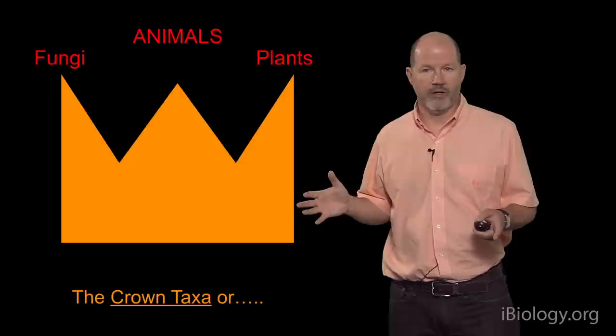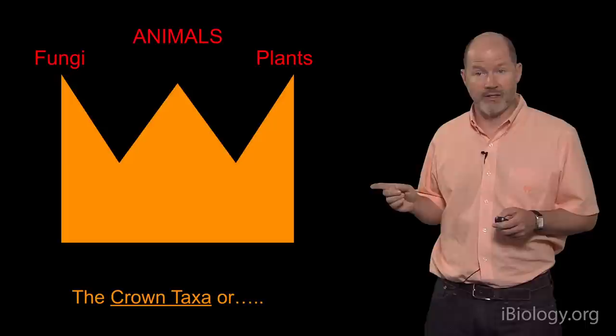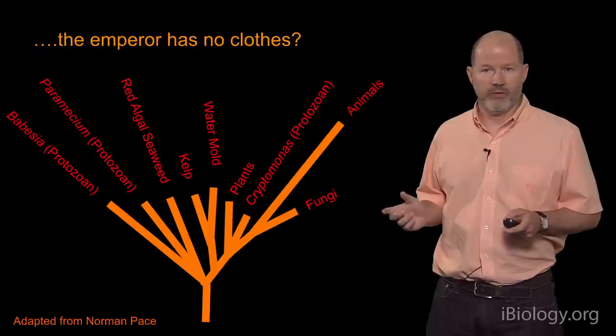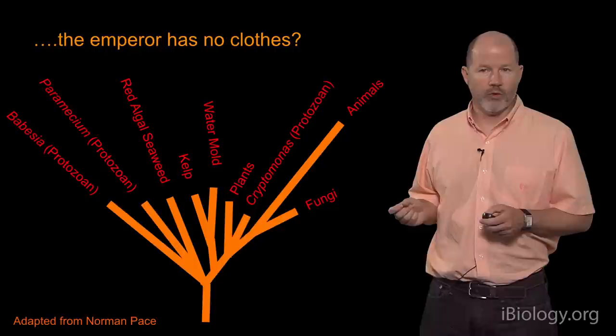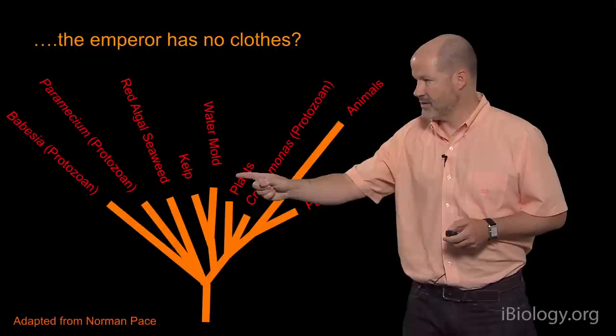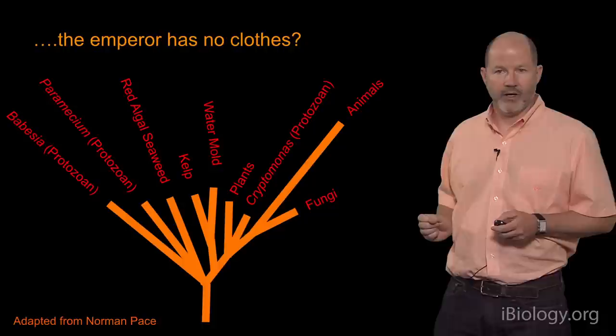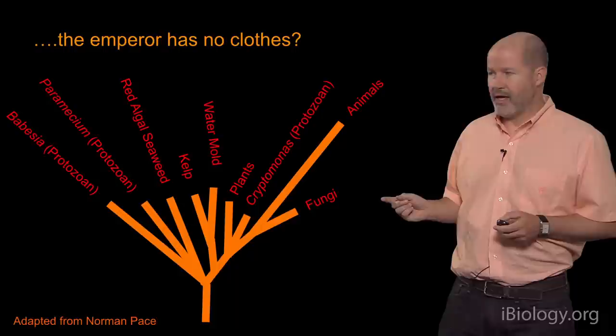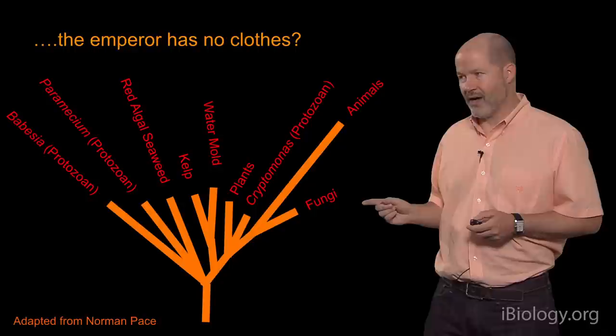Starting in the 1960s, we had a revolution in the study of relationships between different organisms and started to realize that many things we were seeing — and also not seeing — are very different from these three major groups. For example, if you look at a key gene present in all known organisms, you can infer how those organisms are related to each other. The fungi, animals, and plants are just three twigs on a branch that has many other twigs. If the length of those lines denotes evolutionary relationships, there are more than three kingdoms — easily a half dozen.